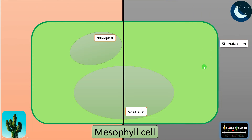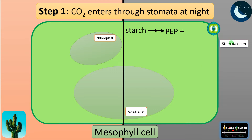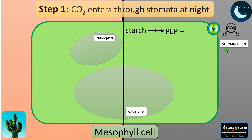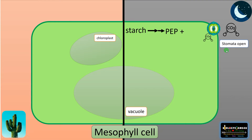So this is a mesophyll cell. Step one: carbon dioxide enters through stomata at night. In CAM plants, the stomata is scotoactive — that means it can open during nighttime. When the temperature drops during nighttime, the stomata opens and carbon dioxide enters through the stomata.